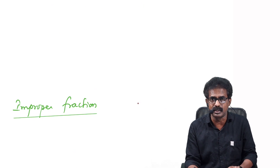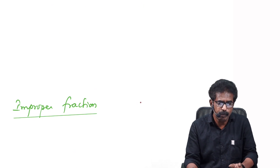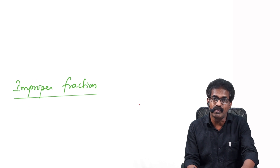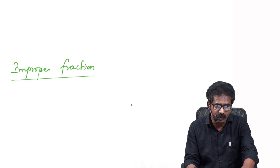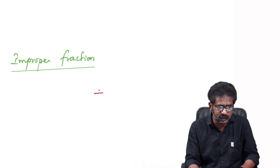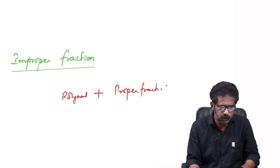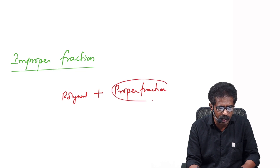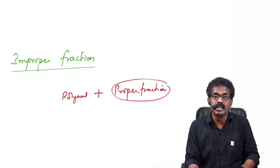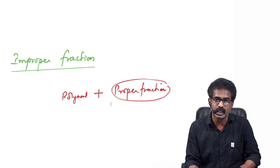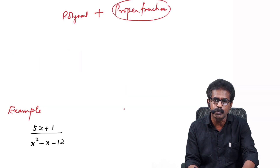If an improper fraction is given, you divide it and write it as the sum of a polynomial and a proper fraction. This proper fraction can then be resolved using any one of the three types I just taught.